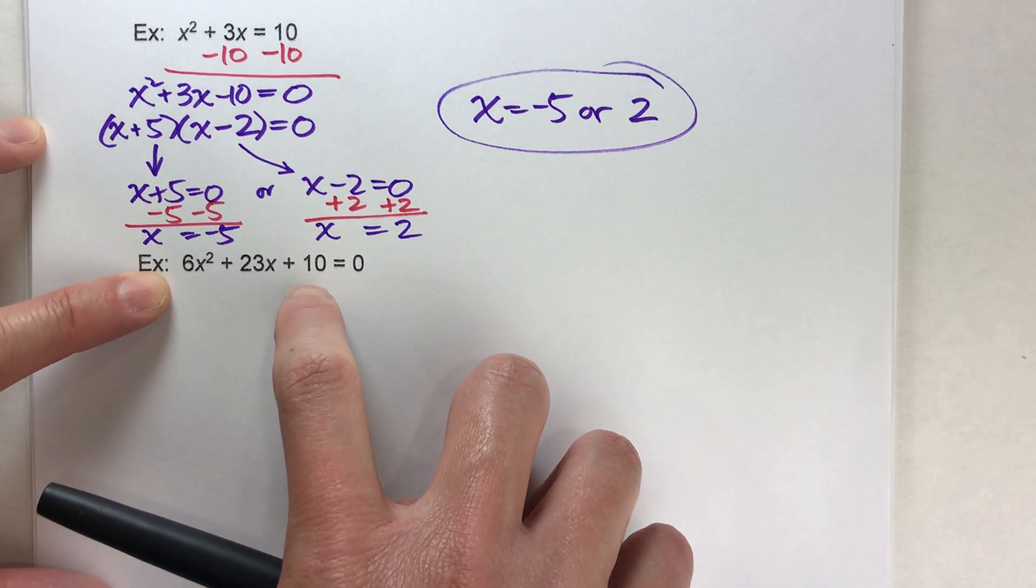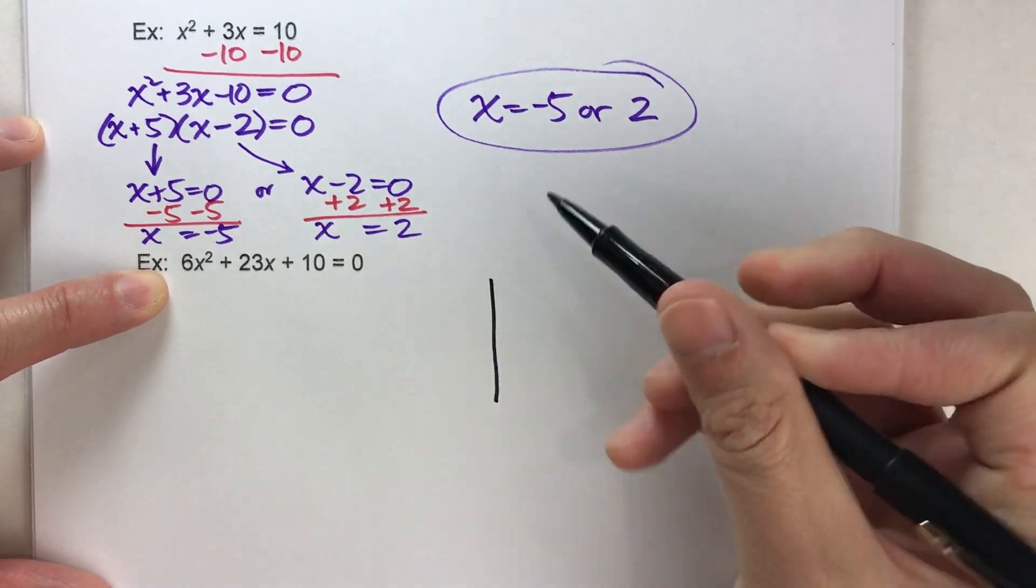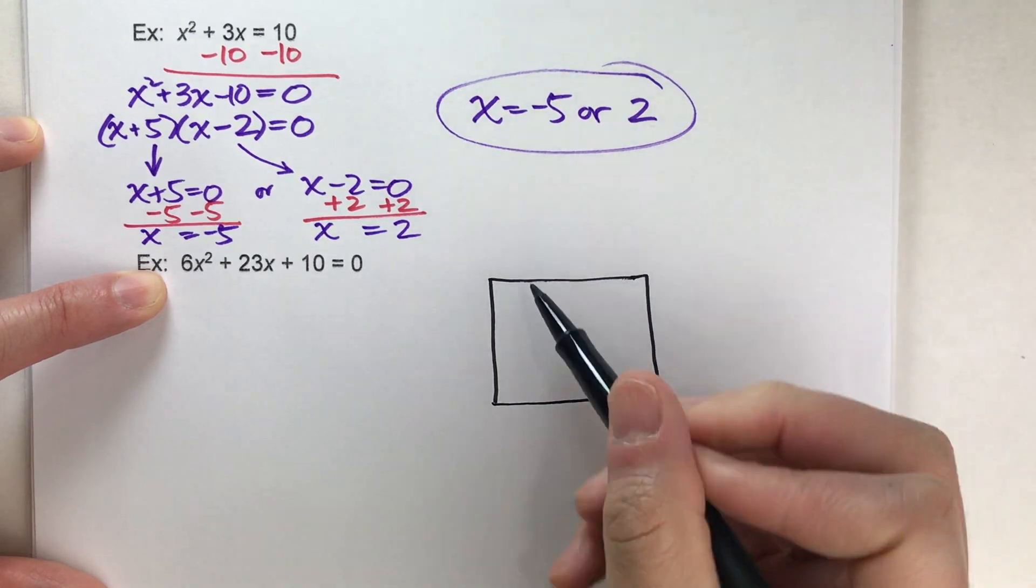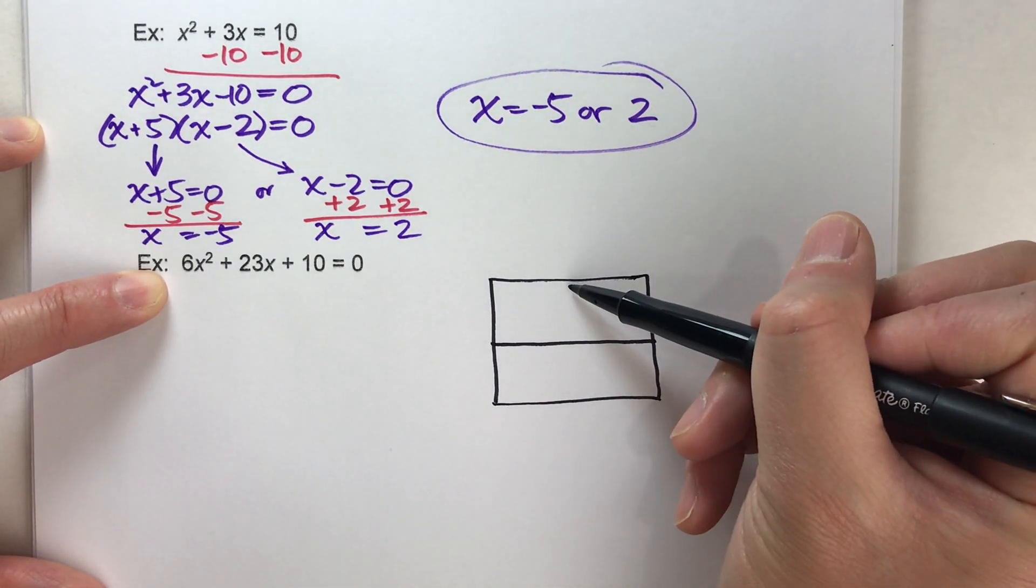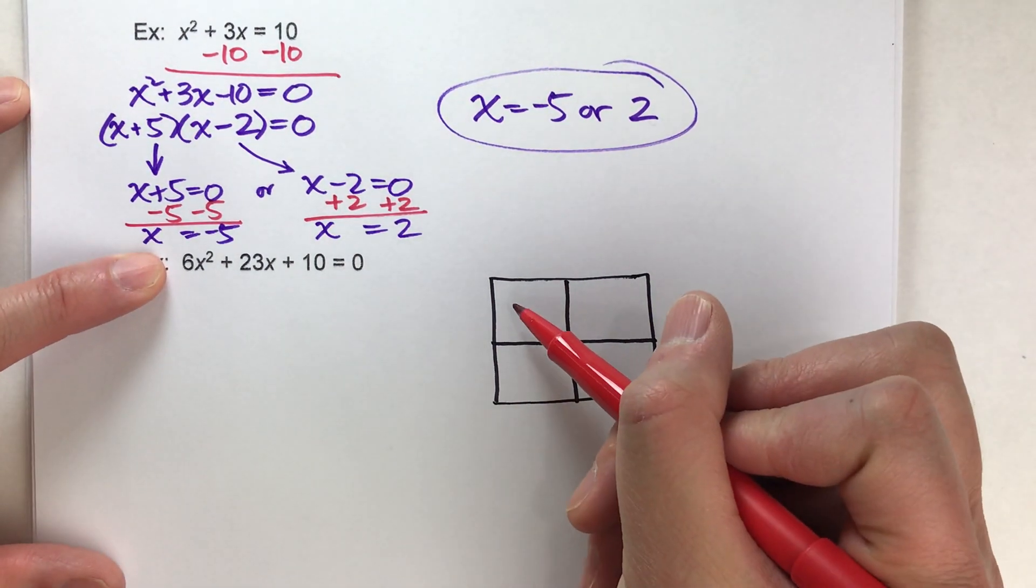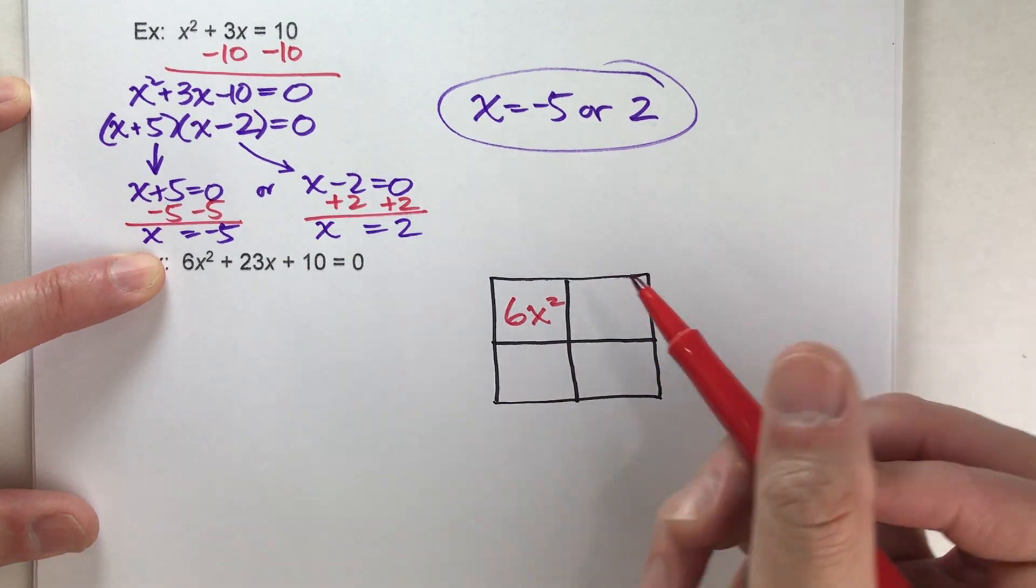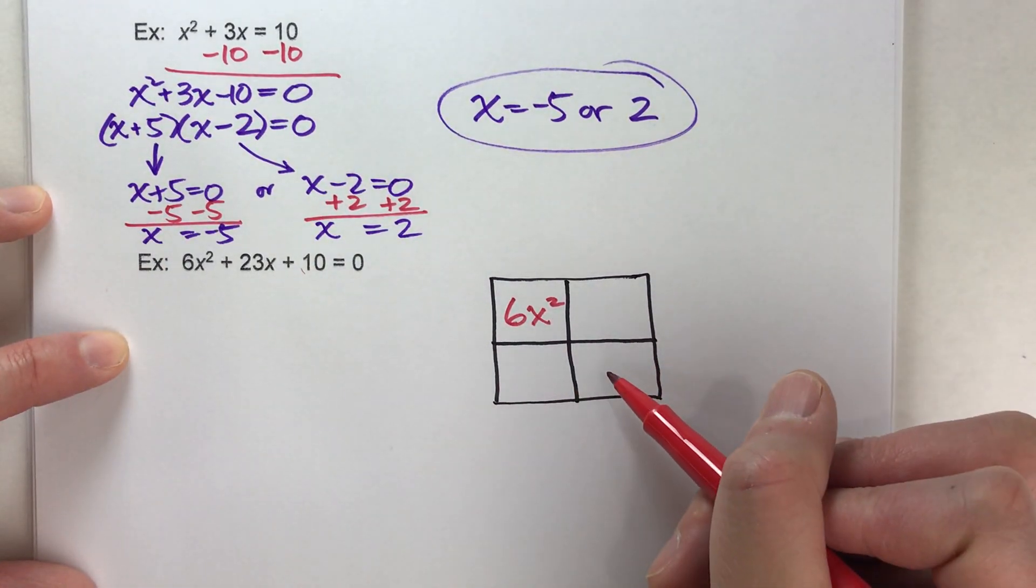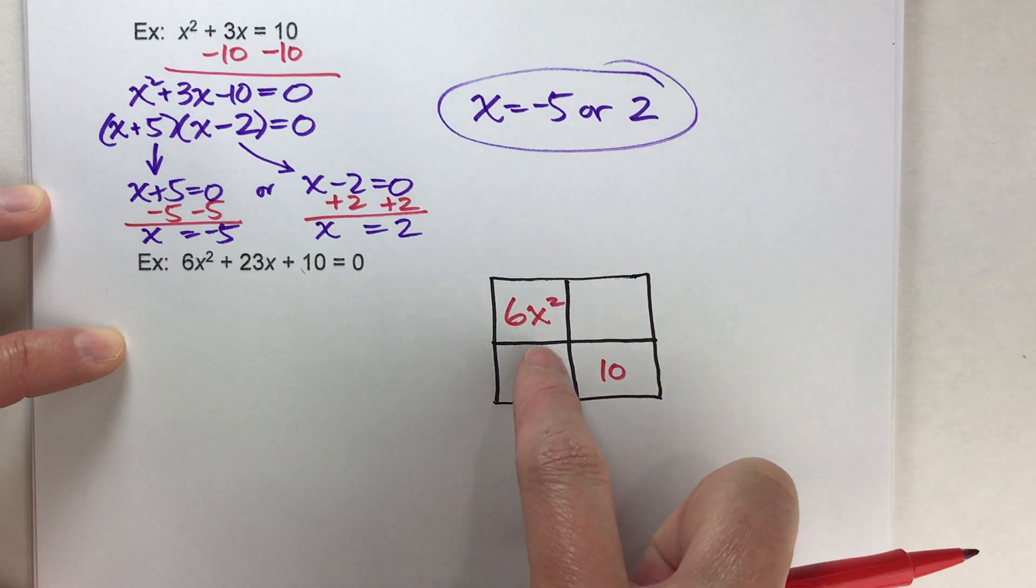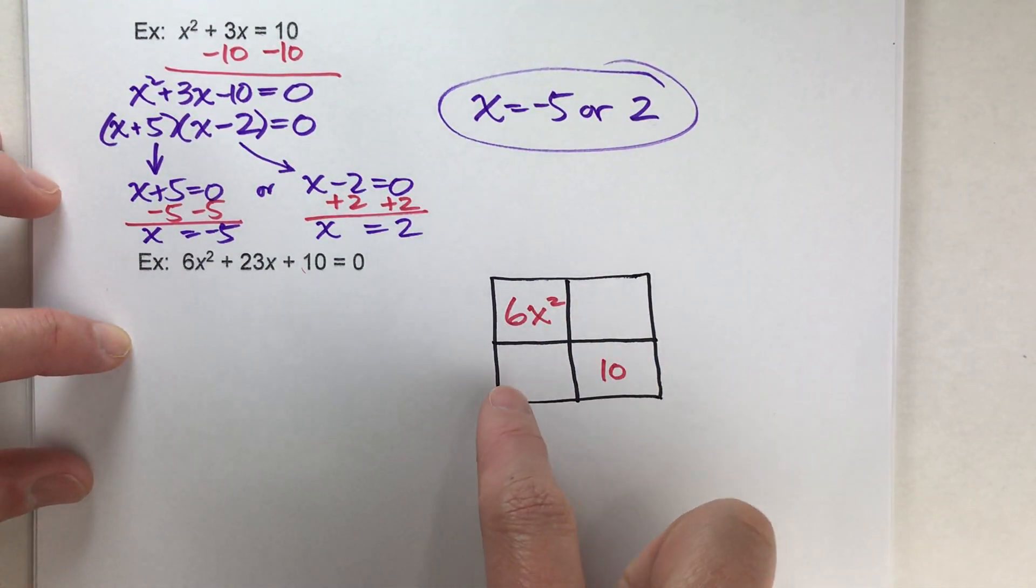Second step, we've got to factor this. If you don't know how to factor this using the area model technique, check out the video down below because this is a pretty cool technique which allows us to factor this pretty easily. I take my 6x squared, my x squared term goes here, my constant term goes here, and then my x term is going to be broken up into two parts. The question is how do we break this up?